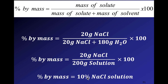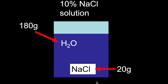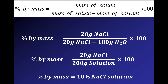That means if you measure out 100 grams of it, 10 grams of it will be sodium chloride. If you were to cut this solution in half, you'd have 100 grams in each portion, each containing 10 grams of sodium chloride.